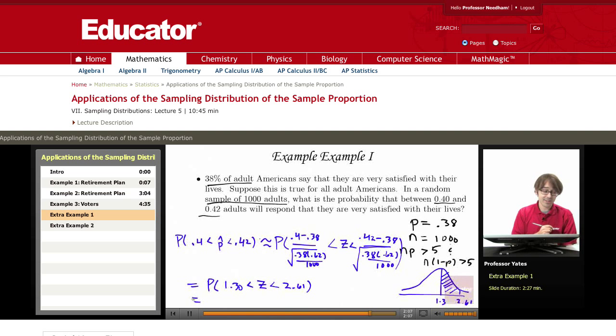So I look up 2.61 in my charts, and I get 0.9955. I look up 1.30 in my chart, I get 0.9032. So I subtract those two, and my probability is going to be 0.0923.